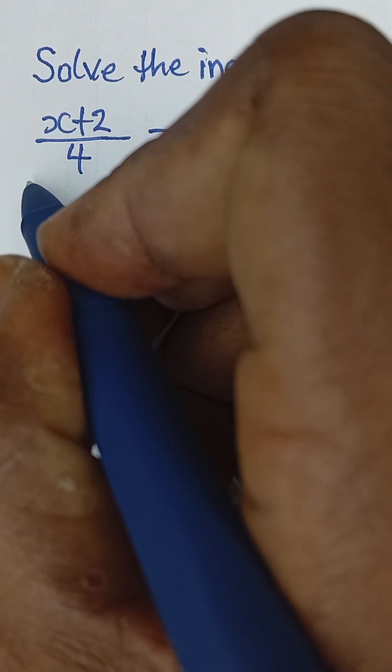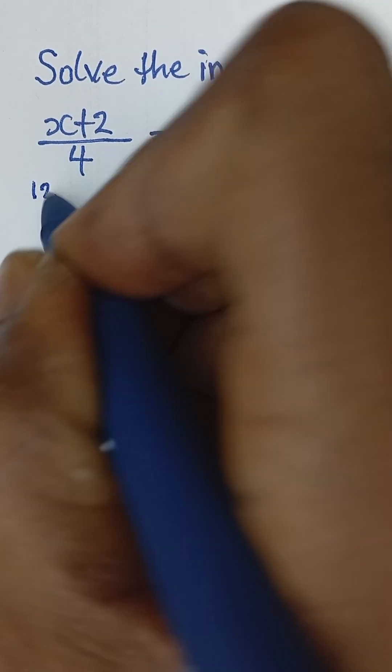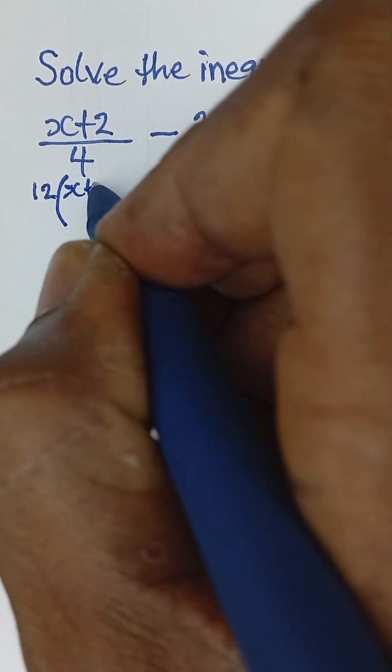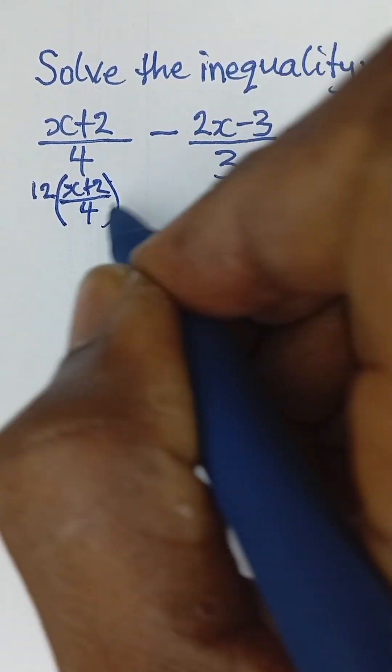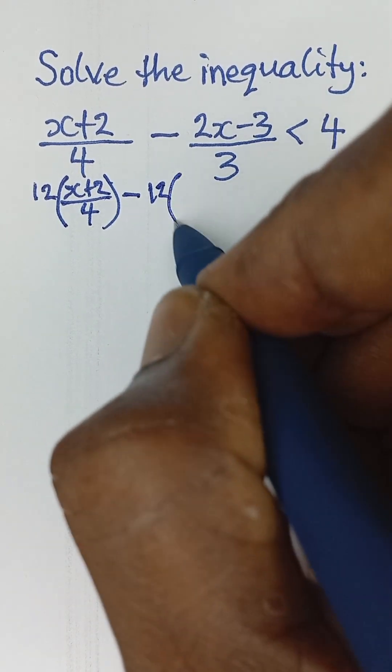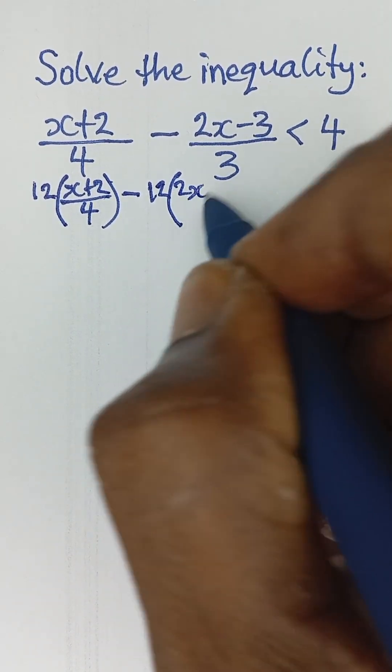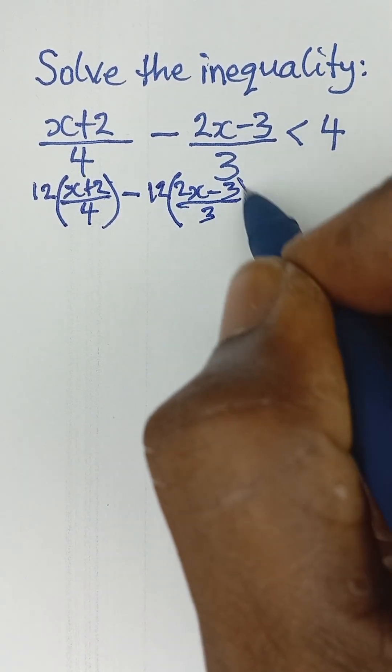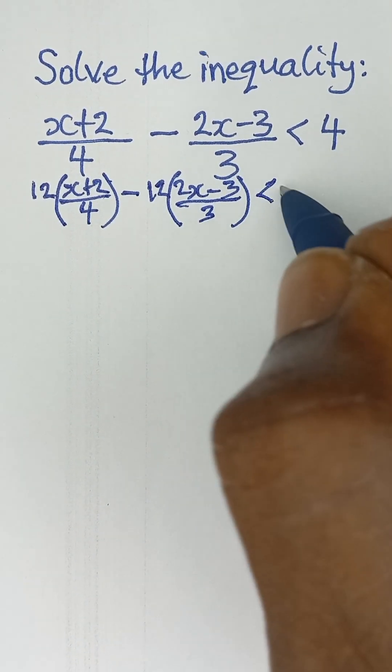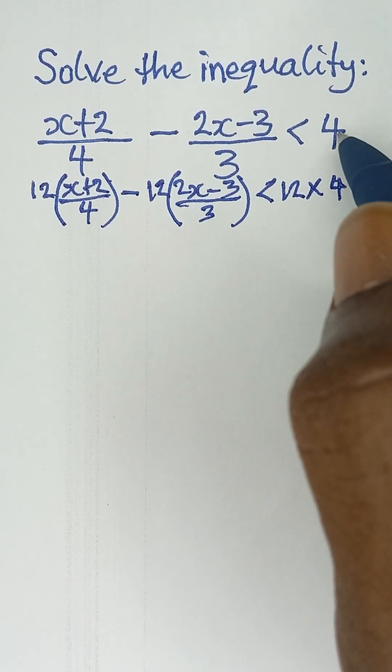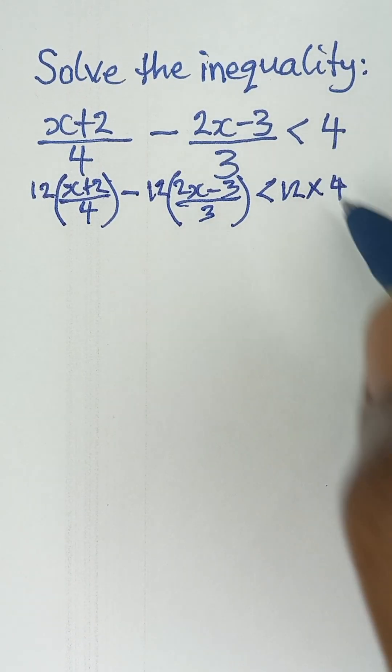So I'm simply going to say 12 and then multiply by this term which is (x+2)/4, and then minus 12. Also multiply this second one which is (2x-3)/3. And then it is less than 12 multiplied by 4. Also multiply this 4 by 12.